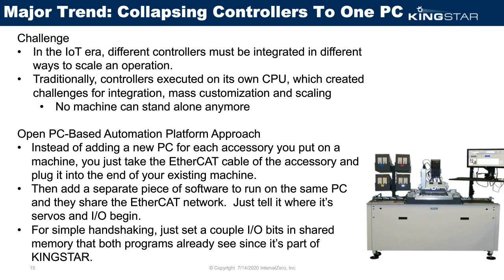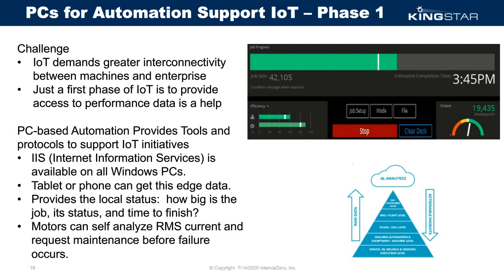Here's Phase 1 of IoT. Use tools you already have — IIS, Internet Information Services, software that's on every Windows PC. A UI is served as a web page, so any phone or tablet can access that screen. It's also large enough to be seen from almost anywhere on the factory floor — shown here with a 28-inch monitor. You can get local status: how big is the job, how is it doing, when is it going to finish. Other data like RMS motor currents can be self-analyzed and displayed.